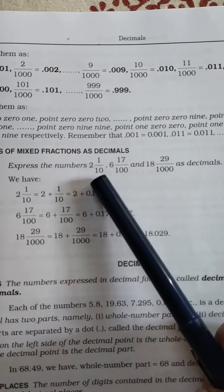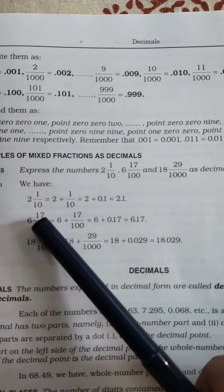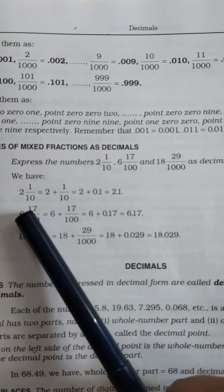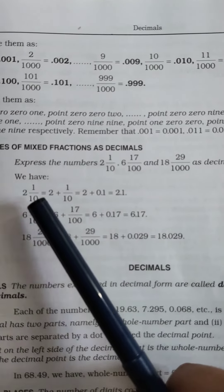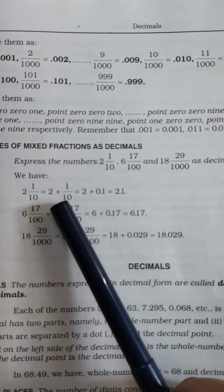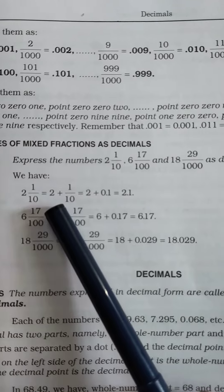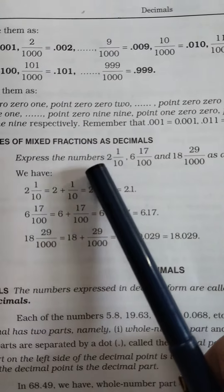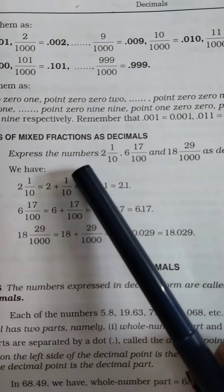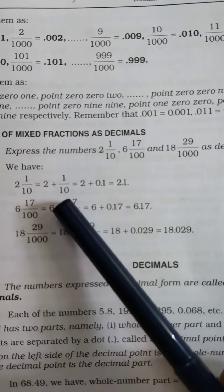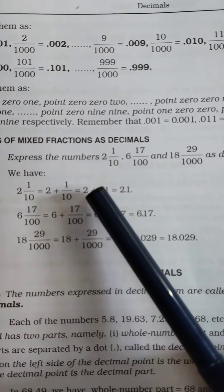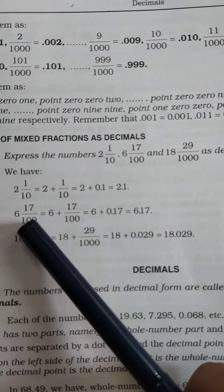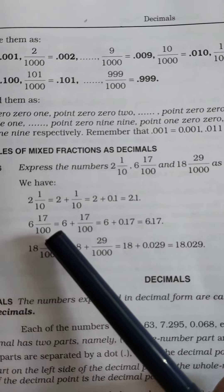We have to convert these mixed fractions into decimals. First, look at the first example: 2 and 1/10. It will be written as 2 plus 1/10. Now 1/10 means 0.1. We have learned how to convert this type of decimal fraction into decimal numbers. So 2 plus 0.1, the answer will be 2.1.